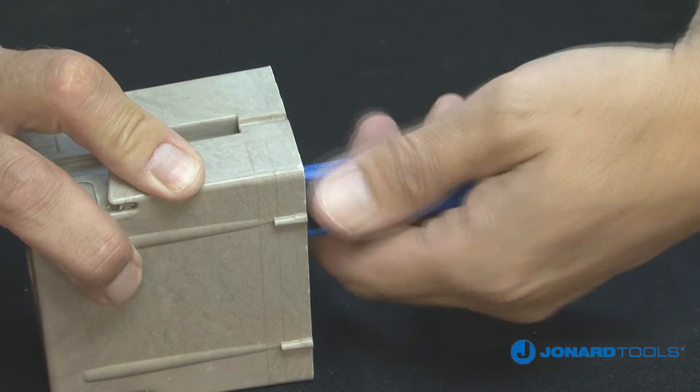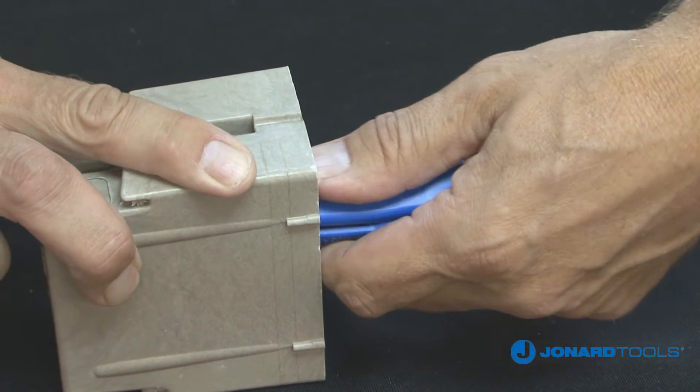Next, grasp the tool near the cartridge and rotate the tool four to six times to strip the cable.